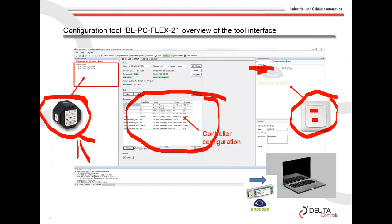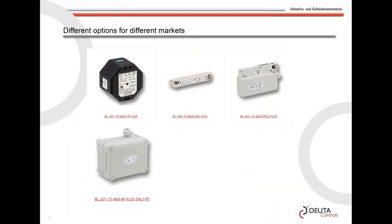You upload the configuration wirelessly to the EnOcean controller — a key difference from other systems on the market. We do not need a wired connection to DALI; everything is done wirelessly. You can enter a customer's building at any time without needing support from an electrician to interface to the DALI lines.